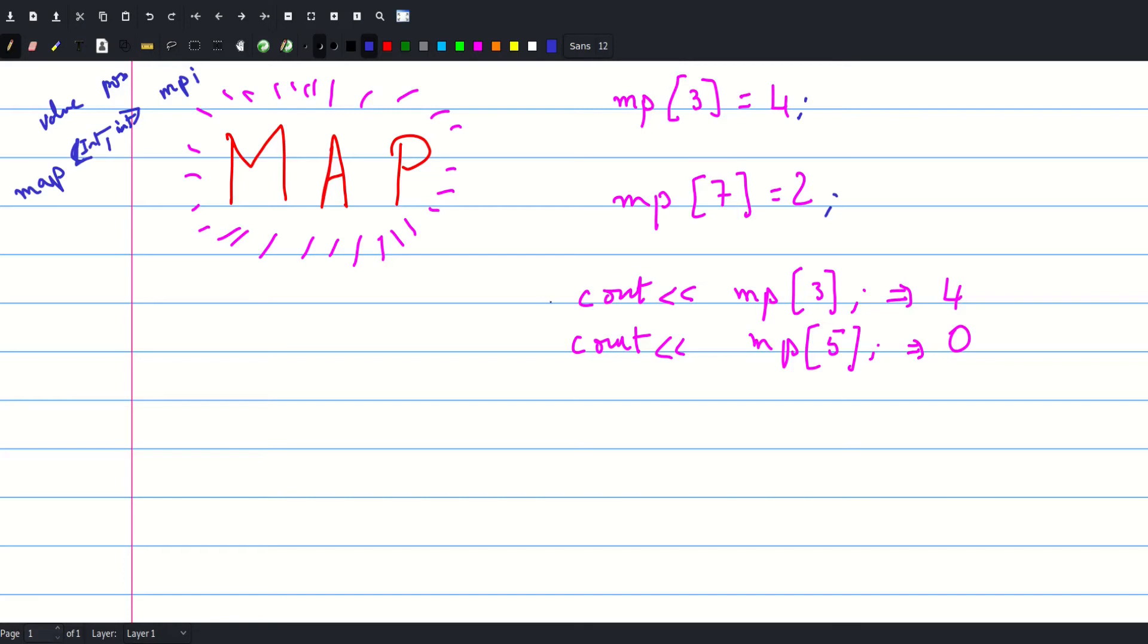And the map mp of 7 is 2. If we go and print it, we would get that the map mp of 3 is 4. But there is something we have to keep in mind. See here I did not add a 5 to my map. I did not assign a value to 5. That's why when I tried to print mp of 5 it gave me 0, because by default it would assume that this operation acted as adding 5 to my map and assigning the default value of 0 to it.